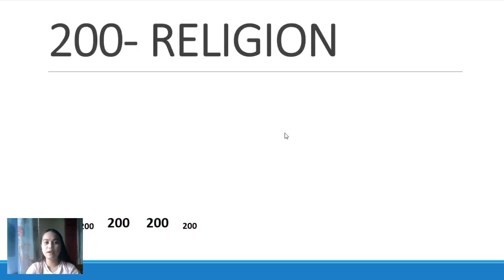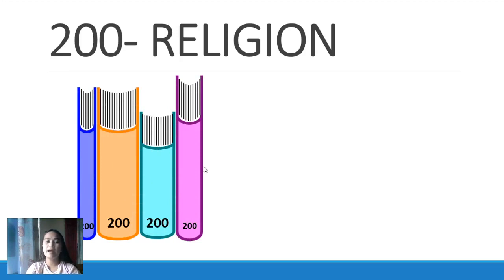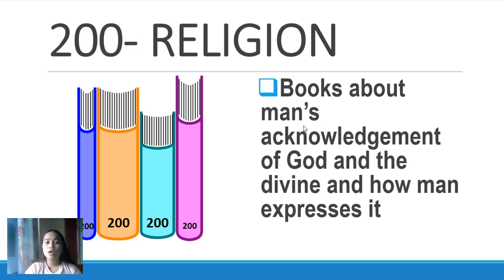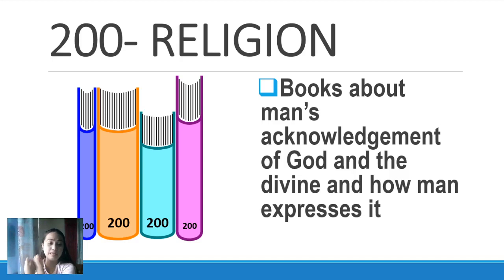Next is 200. It is all about religion. So if you are going to research about religion or the history of religions, you will search in section 200. The spine label is 200. It is all about books on man's acknowledgement of God and the divine, and how man expresses it. So if you have an assignment from your religion teacher or in Christian Living, you can go to section 200.